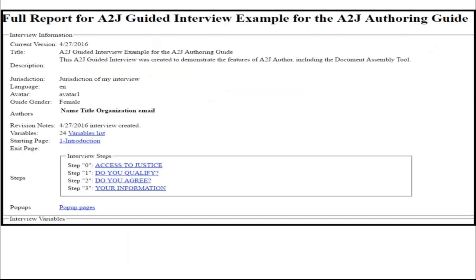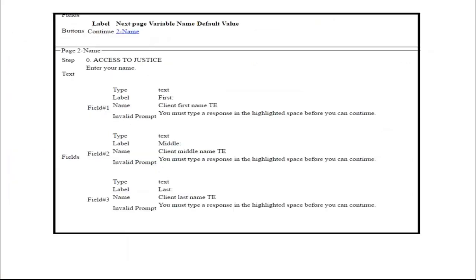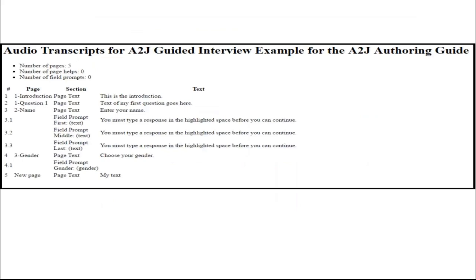This is an example of a full report. At the very beginning you can see it has metadata about the guided interview, the jurisdiction, and the steps that are used. And this is an example of a transcript report for that same interview. The full report was several pages long, while the transcript report is just one short paragraph showing the text that needs to be translated.